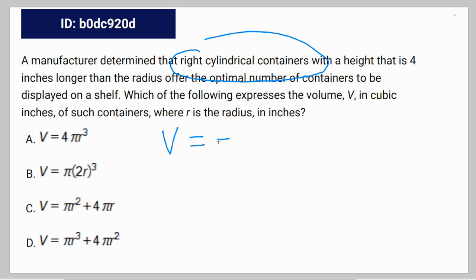Anyways, this would be π r² times the height, which is expressed to be a height that is 4 inches longer than the radius. So, 4 plus r.